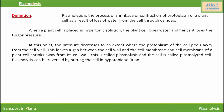This is called plasmolysis and then the cell is called a plasmolyzed cell. Plasmolysis can be reversed by putting the cell in a hypotonic solution.